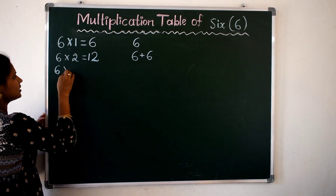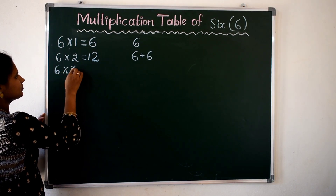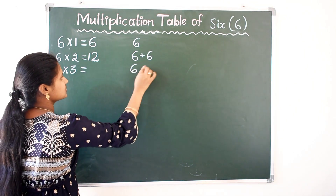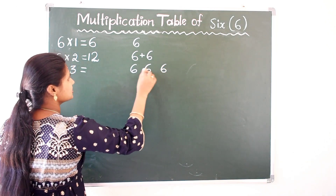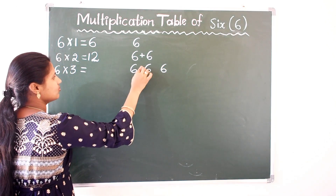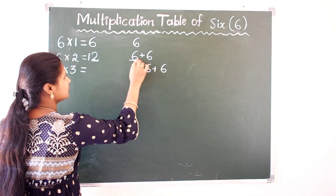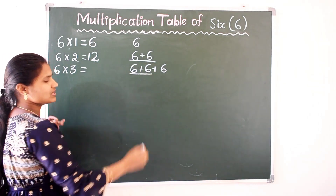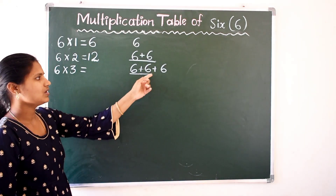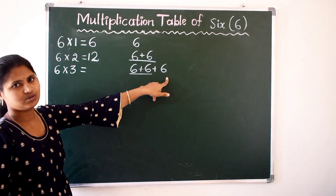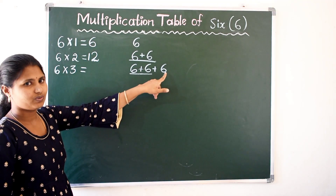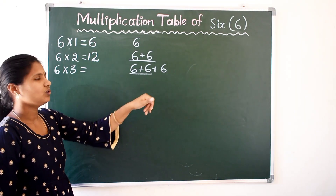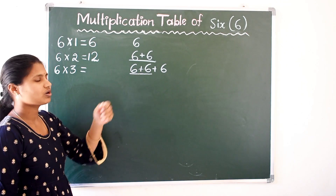Next, 6 3s are — 6 three times. So already we know 6 plus 6 is 12, right. Then 12 plus 6 — how much? 12 after 6 more numbers, count: